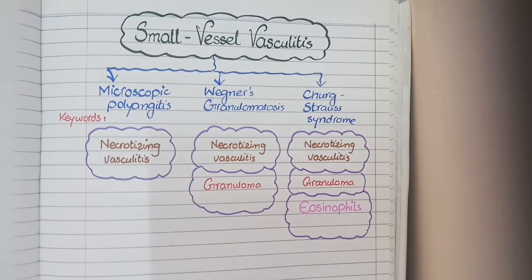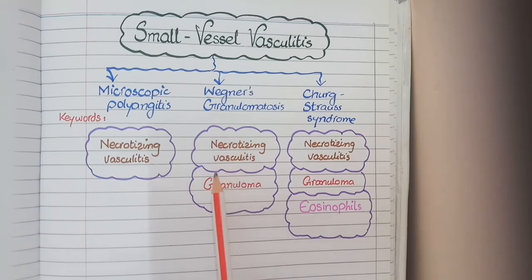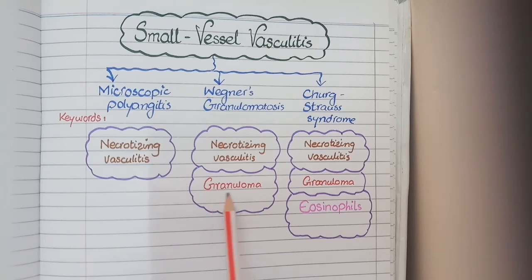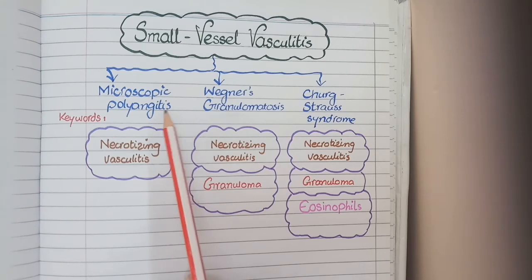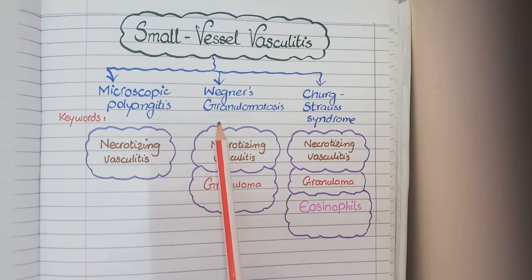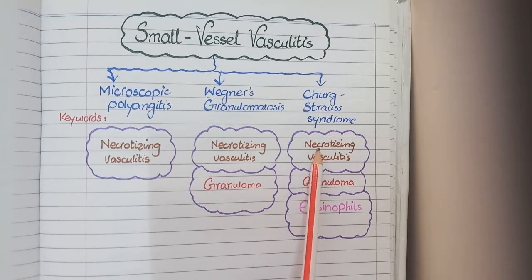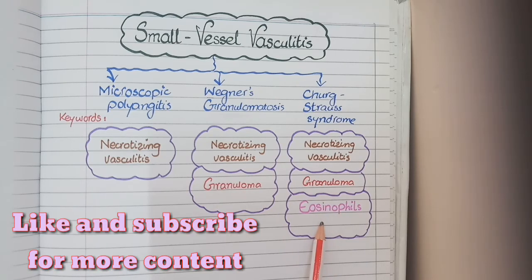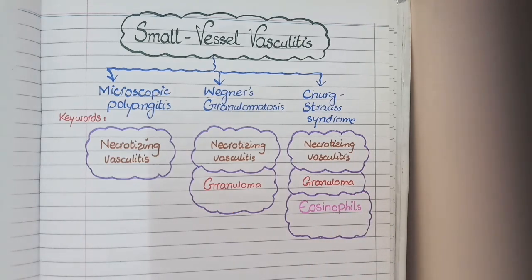Wegener's granulomatosis, in comparison to microscopic polyangitis, has one additional feature — granulomas — so it is also known as granulomatosis with polyangitis. Similarly, Churg-Strauss syndrome has the same features as Wegener's granulomatosis — necrotizing vasculitis and granulomas — but with one additional feature: the presence of allergic inflammatory cells, eosinophils. Therefore, Churg-Strauss syndrome is also known as allergic granulomatosis with polyangitis.